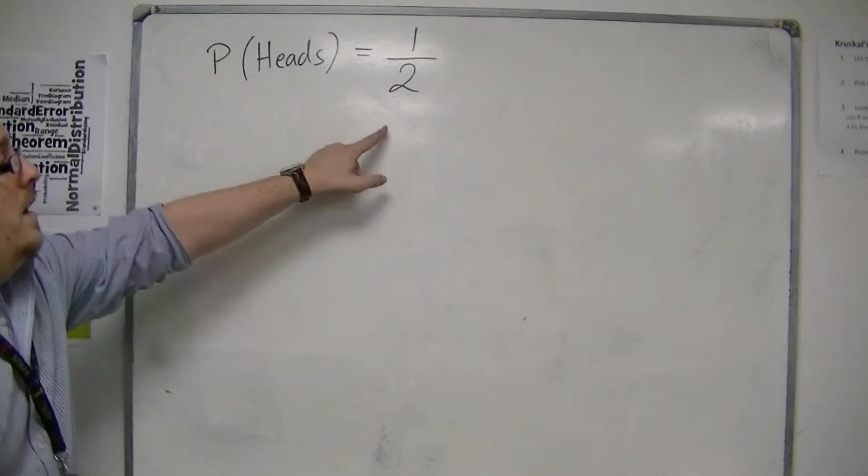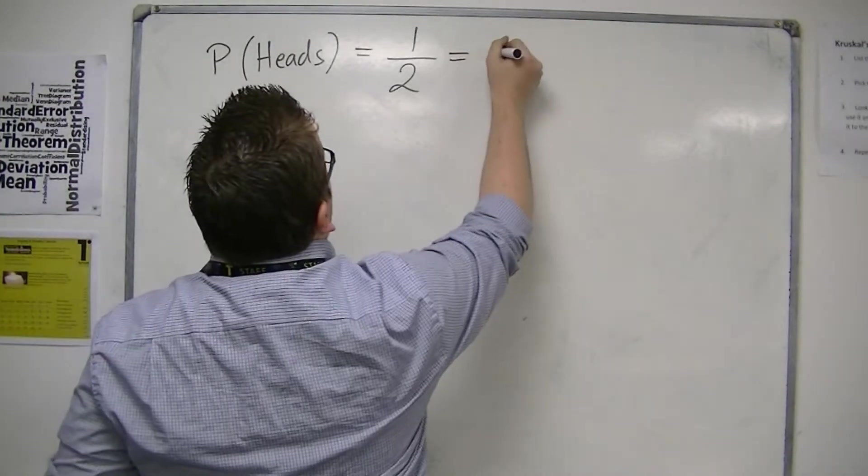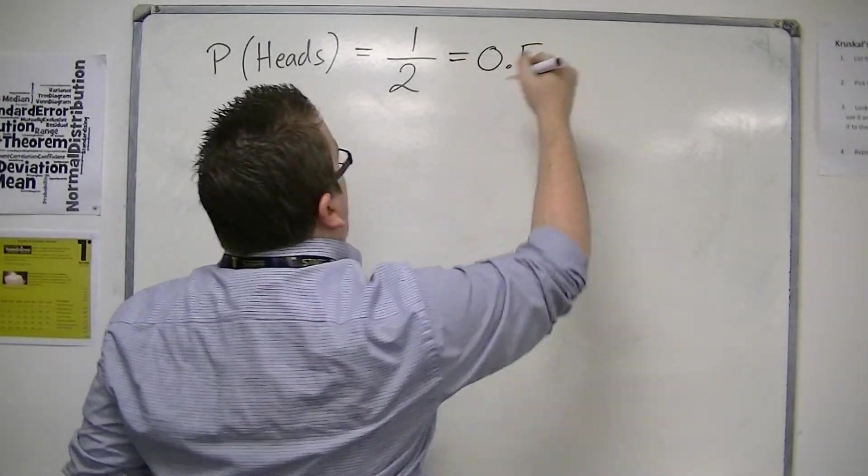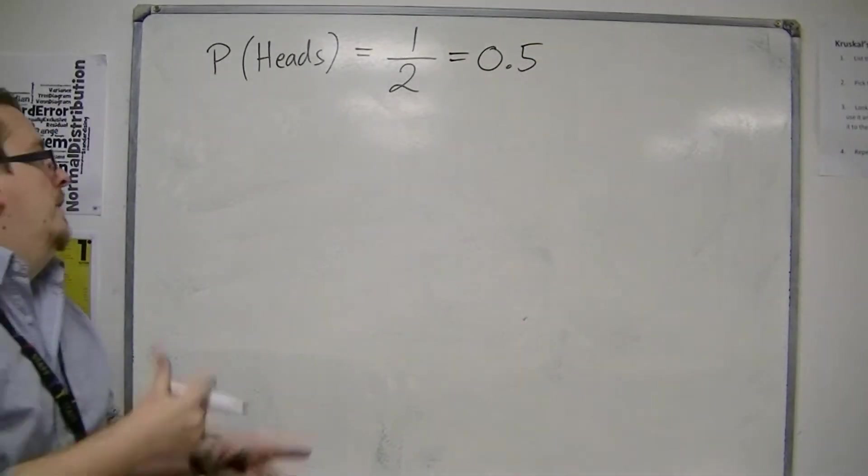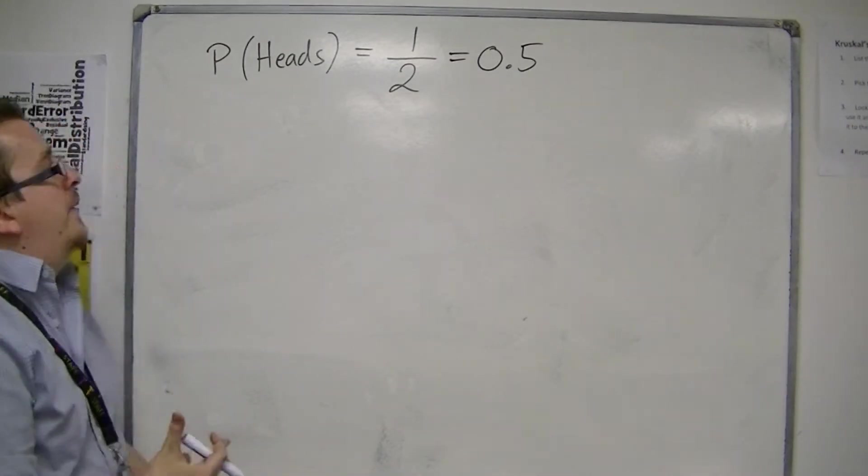So one half, as it is, could also be written as 0.5, for example, or 50%. But in the majority of cases, we want to keep to fractions and decimals.